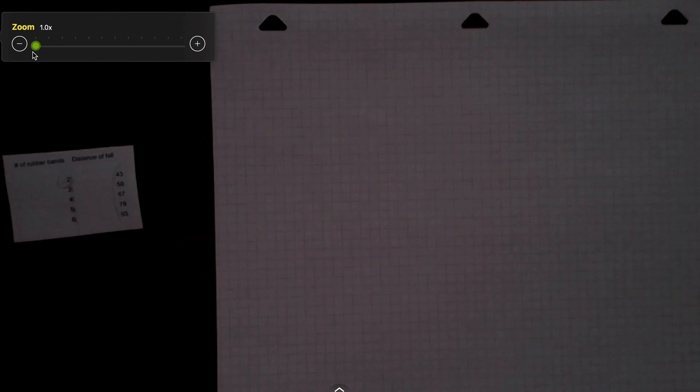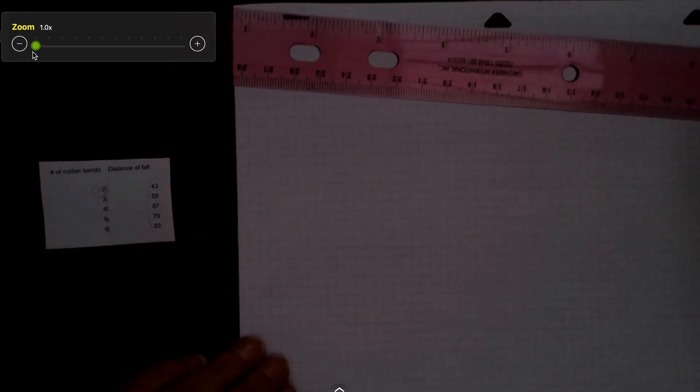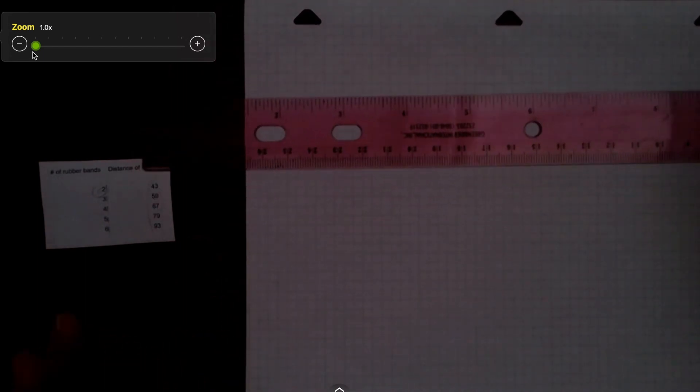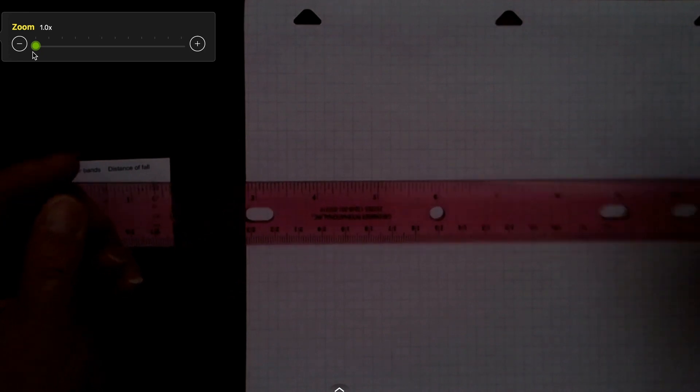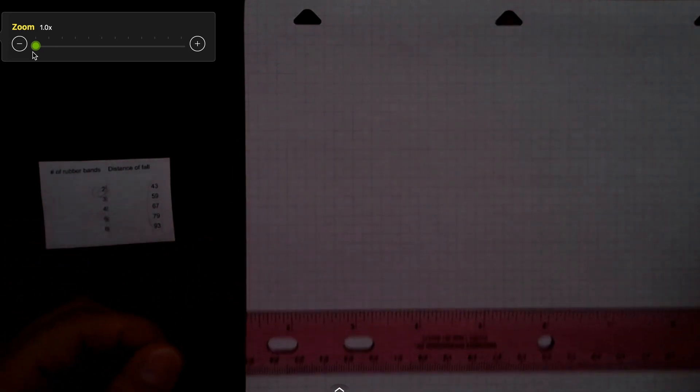Now we are going to use this data to graph. I buy these clear rulers at the Dollar Tree. I don't know about your students, but mine are super strong and just accidentally break my rulers on a very regular basis. You can get these three for a dollar at Dollar Tree. It's nice to have the clear rulers and you will see why that works well in just a little while.